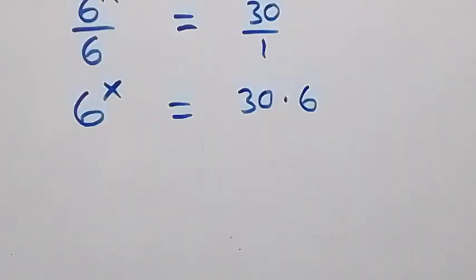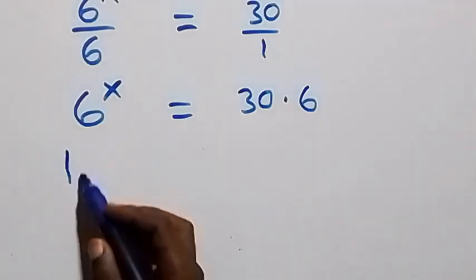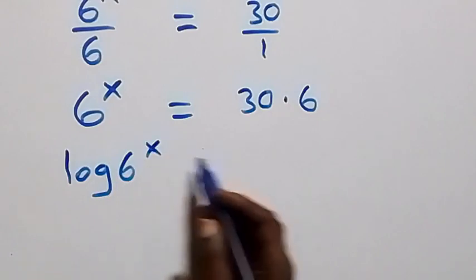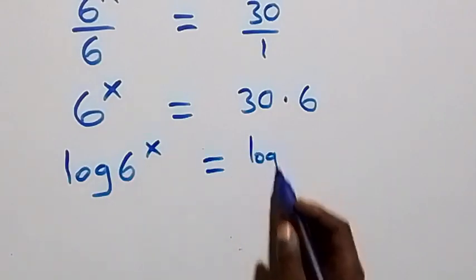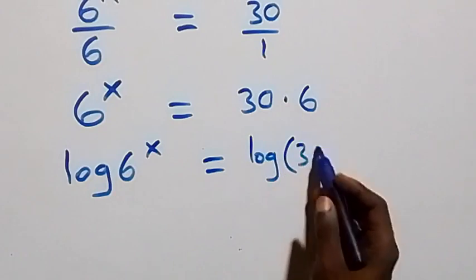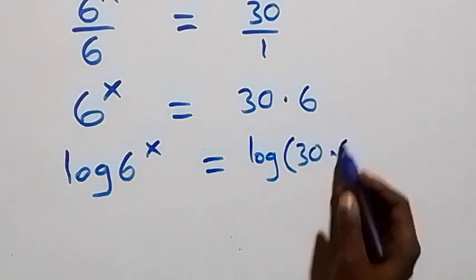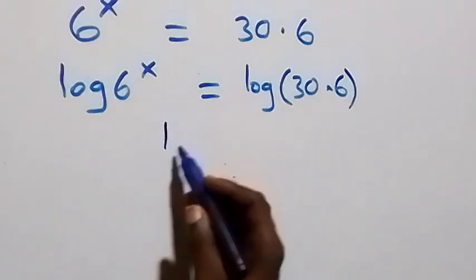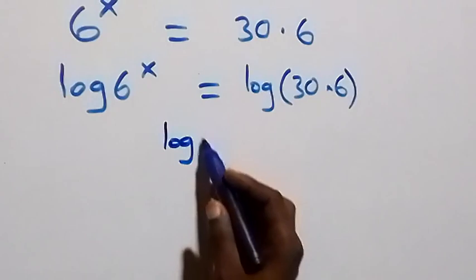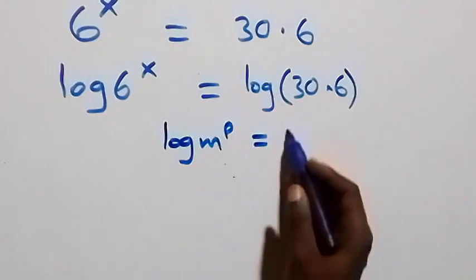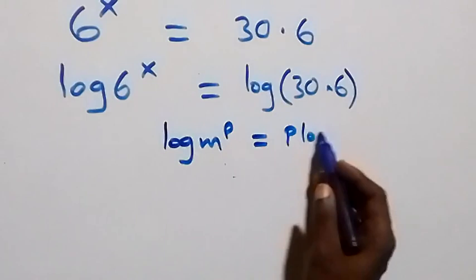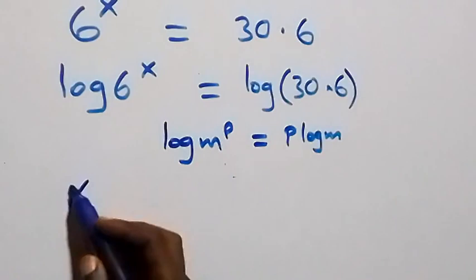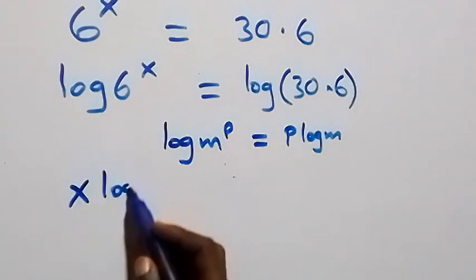The next step: we take the log of both sides. Then we have log of 6 raised to power x equals log of 30 times 6. From here we apply the power law of logarithm: when we have log m raised to power p, that is the same as p log m. So what we have here becomes x log 6.